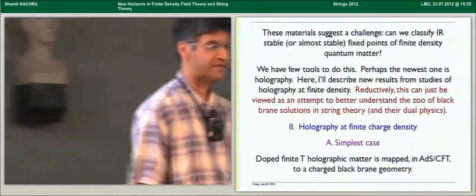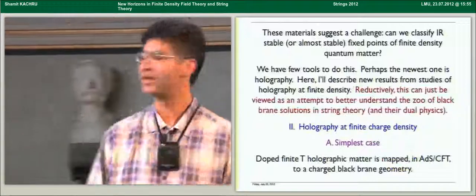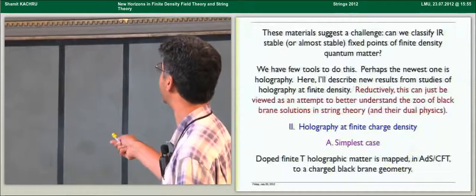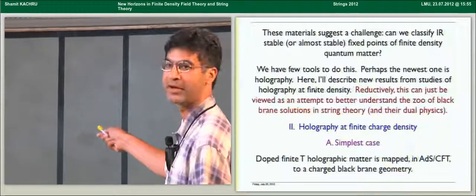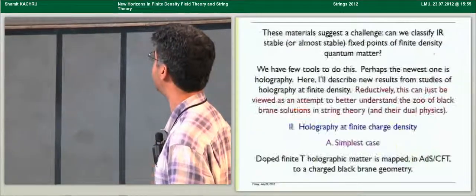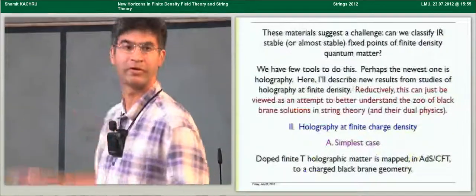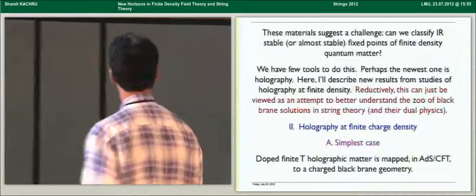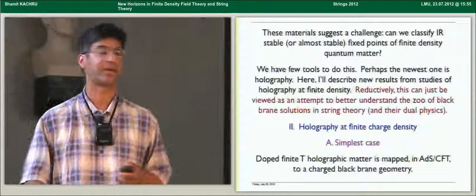Now, if you're reductive and you think our goal should be to study classical and quantum gravity using strings, then I would say reductively you can just view this as an attempt to better understand what is clearly a rich zoo of black hole and black brane solutions in string theory and their dual physics. And in fact, it is really pictures like this that have motivated the exploration and understanding of this rich structure in the last few years. So just for more selfish purposes, learning about black holes has been greatly stimulated by this interface with condensed matter physics.